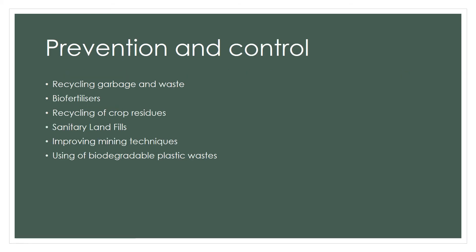Prevention and control of soil pollution includes: recycling garbage and waste materials; using biofertilizers instead of pesticides, herbicides, and insecticides, switching to environment-friendly options; recycling crop residue; managing landfill and dumping zones; improving mining techniques so that mine dust is not released; and using biodegradable materials instead of plastic bags, switching to materials which do not harm our environment.